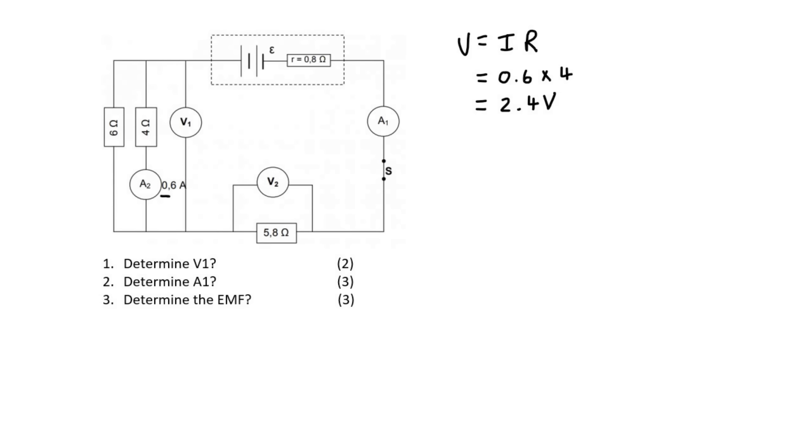And so that will be the voltage for V1, which also means that's the voltage across this branch and it's also the voltage across this branch because voltage in parallel is the same.